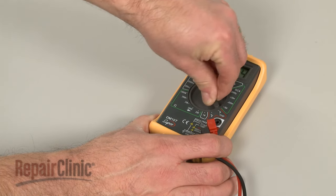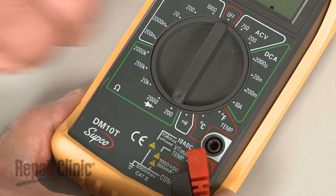When using a digital model, again rotate the dial to the lowest setting for ohms of resistance, or resistance with tone if your meter has this option.